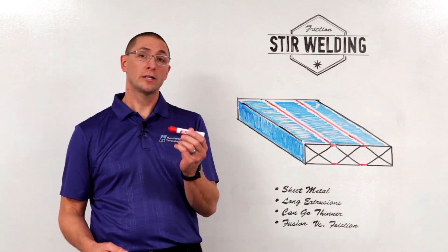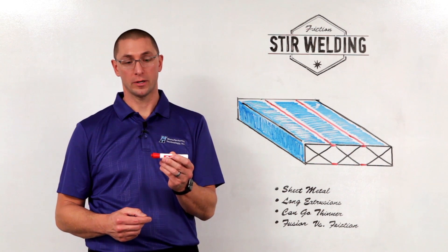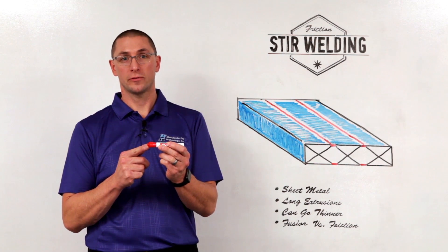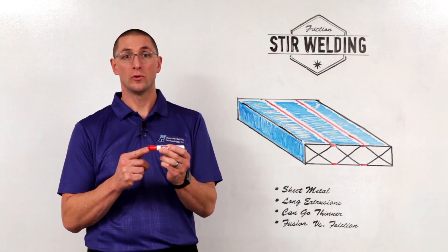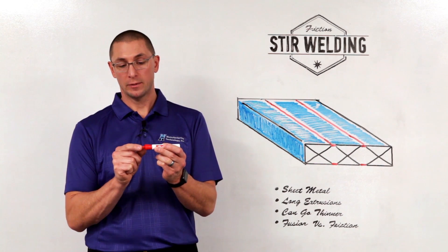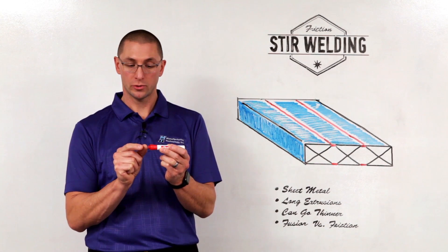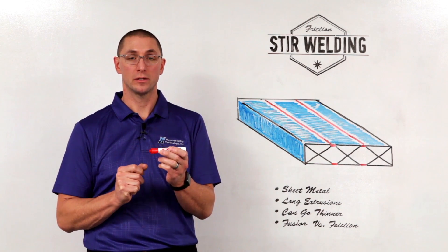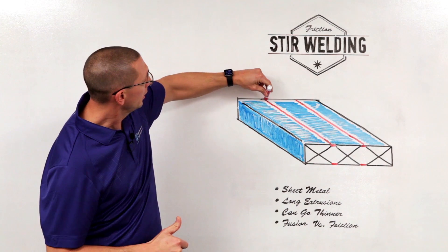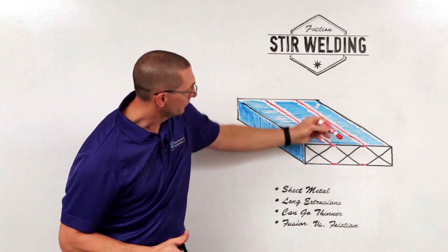We use a non-consumable pin tool with a similar geometry to this marker. The shoulder of the tool rides along the surface and inputs most of the heat as it's rotating. There is a pin that penetrates into the material, a little shorter than the depth of material, and as it rotates, it leaves a forged wake of material in its path.